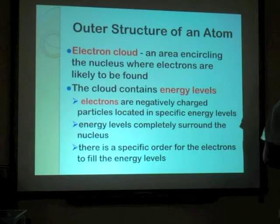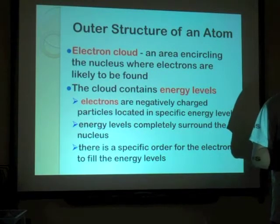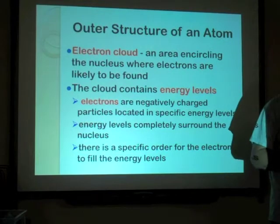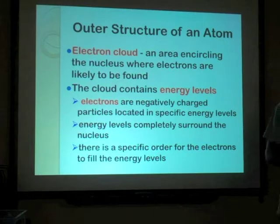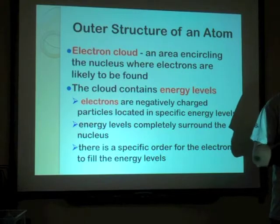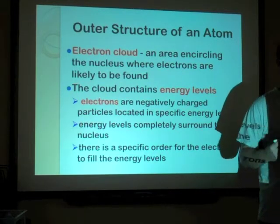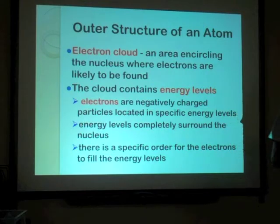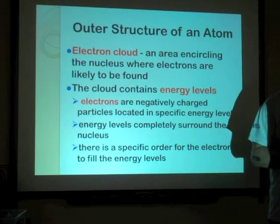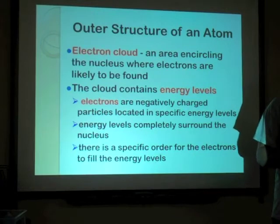The outer structure of the atom is the electron cloud. The electron cloud is an area encircling the nucleus where electrons are likely to be found. We say likely to be found because an earlier scientist thought we could identify where the electrons were at any given moment, but we found out later that's not the case. The electrons are always moving about in a very rapid wave-type form, so we give it this electron cloud idea.